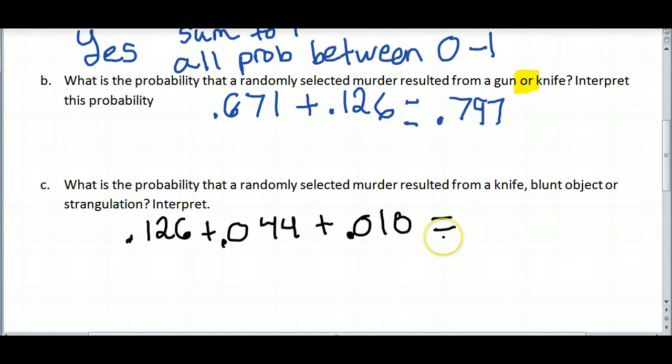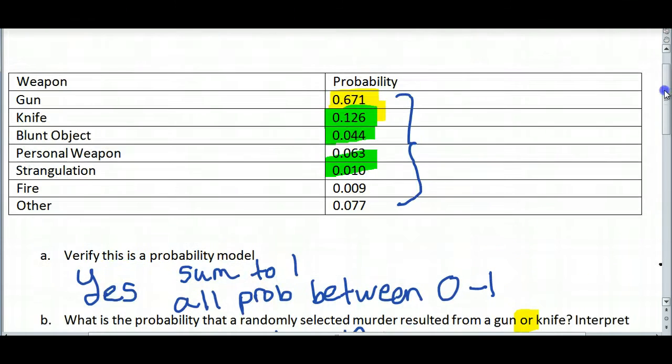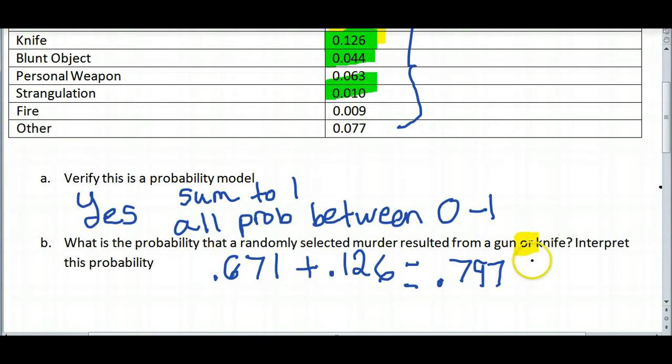So when I add these all together, 0.126 plus 0.044 plus 0.010, I come out with 0.18, or about 18% of murders, if you multiply by 100, are conducted using a knife, blunt object, or strangulation. So that's a look at how we can use a probability model and create problems involving the word or.